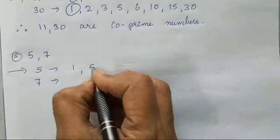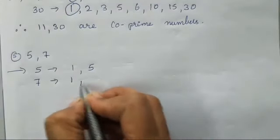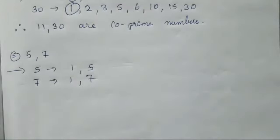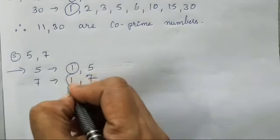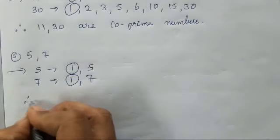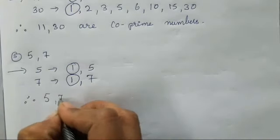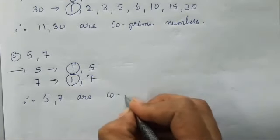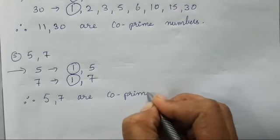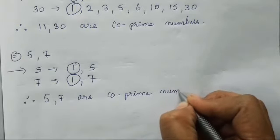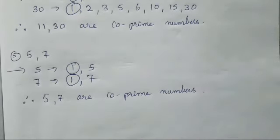So, the factors of 5 and 7. 5, 1's table and 5's table. 7 also 1's table and 7's table. Therefore, only one common factor. Therefore, 5 and 7 are co-prime number.